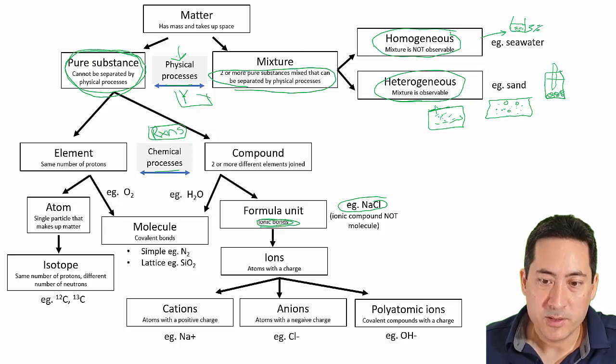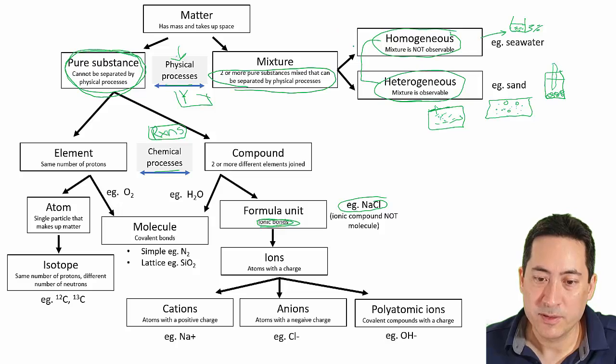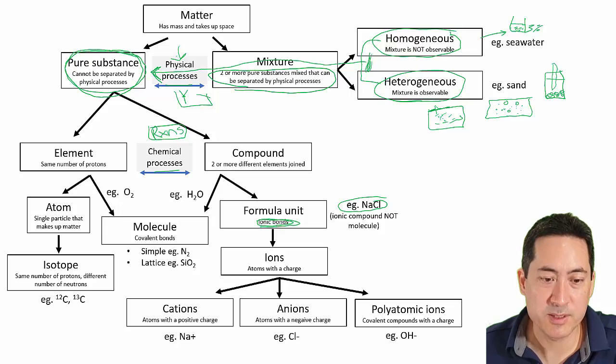So something you've probably done in junior science is taking a heterogeneous and homogeneous mixture. So you might have had salt and sand and water and iron filings. So that's both heterogeneous and homogeneous in different stages. And you've used physical processes to separate them out into pure substances. So once you've got pure substances, there's two types of pure substances.